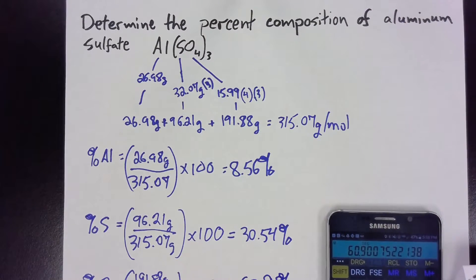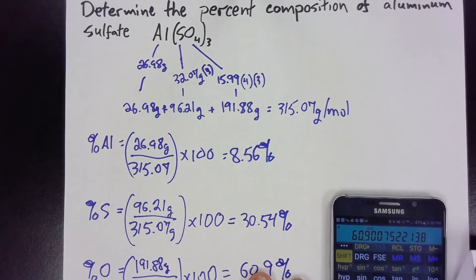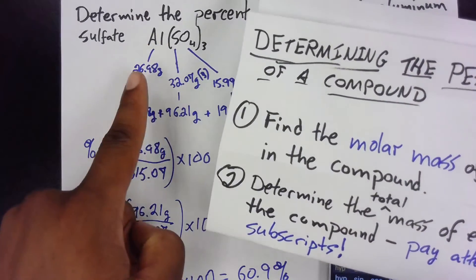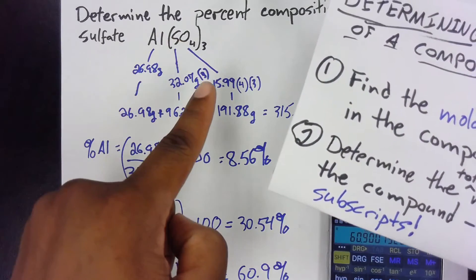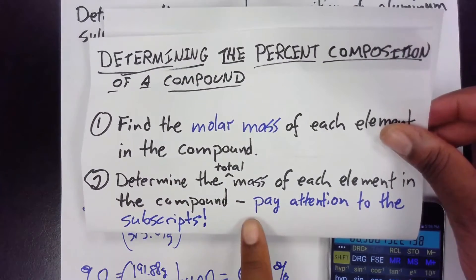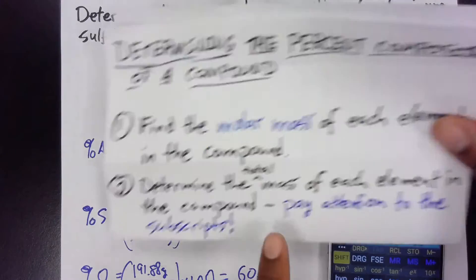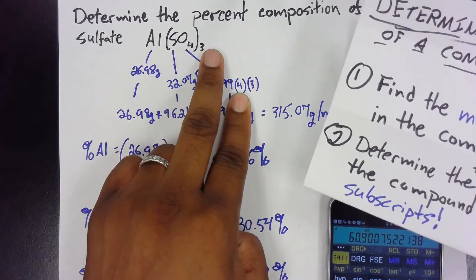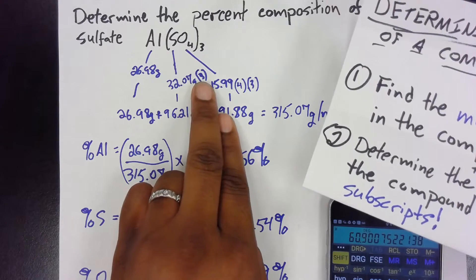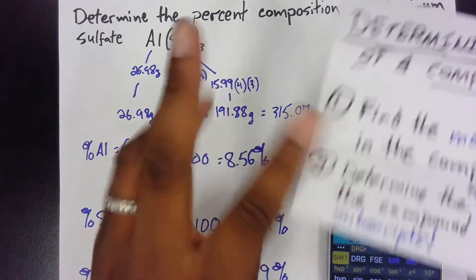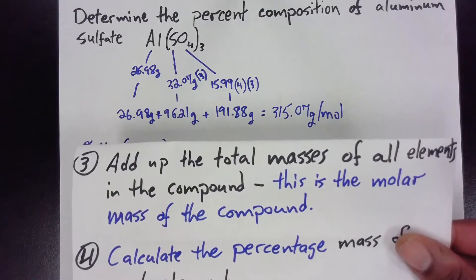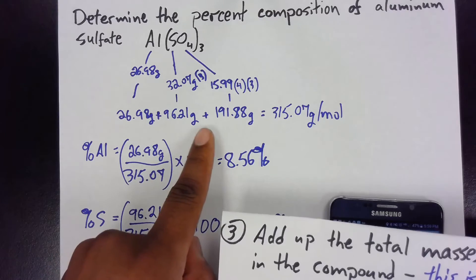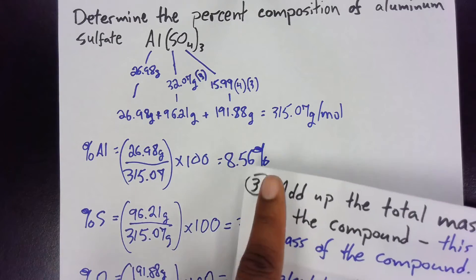We have now determined the percent composition of aluminum sulfate. First, we got the molar mass of each element: Al was 26.98, S was 32.07, O was 15.99. Then we got the total mass of each element by looking at the subscripts and multiplying: aluminum had no change, oxygen was times four, sulfur was times three, and oxygen was times four times three. After that, we added up the total masses — aluminum plus 96.21 for sulfur plus 191.88 for oxygen — to get the molar mass of the compound.